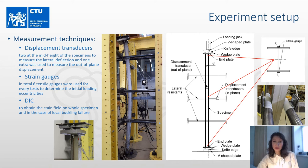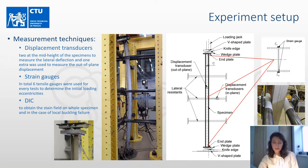Knife edges were employed to achieve a pin-end condition about the major axis and a fixed-end condition about the minor axis. Lateral restraints were provided to all specimens to prevent minor axis deflection. It was important to provide lateral restraints while at the same time allowing free movement in the direction of bending, so plastic pipes were used for this purpose.